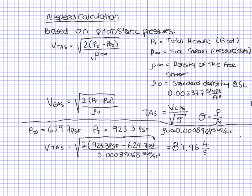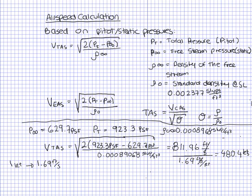811 feet per second doesn't tell me a whole lot in an airplane, so I need to convert to knots since my airspeed indicator reads in knots. I divide by 1.69 feet per second per knot, and that gives me 480.4 knots. The conversion is: one knot equals 1.69 feet per second. So if you have feet per second, divide by 1.69 to get knots; if you have knots, multiply by 1.69 to get feet per second.